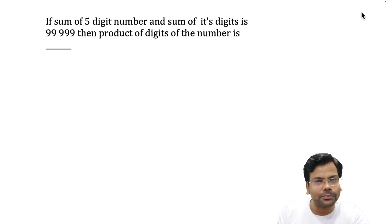Hello friends, welcome again to the world of Maths by Yameen. So there is a question in front of you: if sum of a five digit number and sum of its digits is 99999, then we need to find the product of digits.